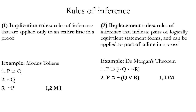Another example is modus tollens. Modus tollens allows us to move from two premises — one of which is a conditional P horseshoe Q, and the other of which is the negation of the consequent, tilde Q — and validly conclude the negation of the antecedent, tilde P.